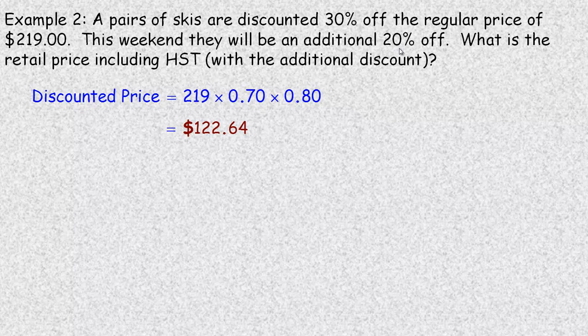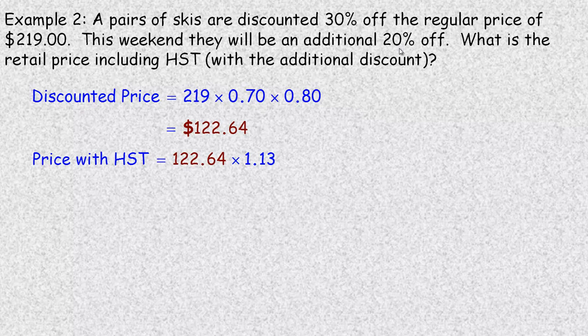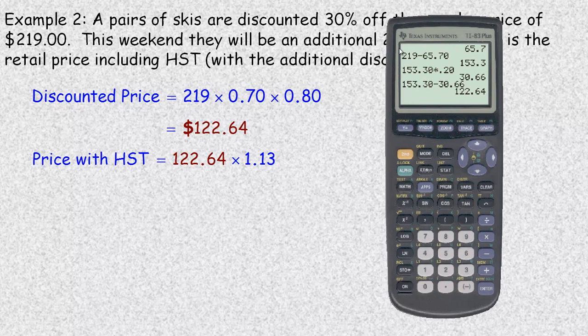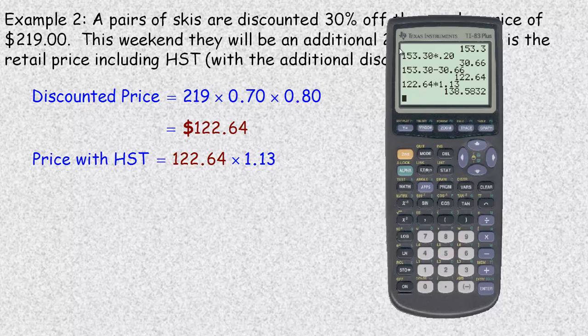Now we want to add in the tax and see what the final price is. The price with HST—I'll bring the calculator just to show one more time—$122.64 times 1.13.